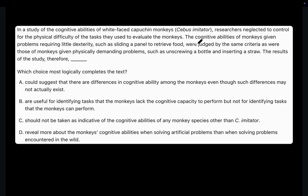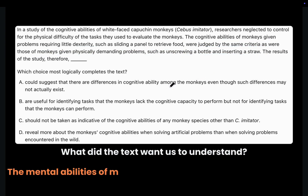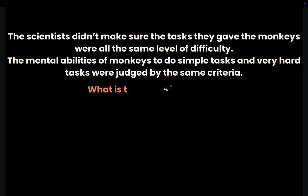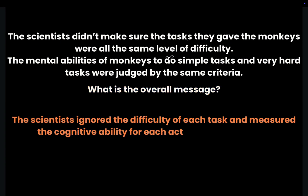Next sentence: the cognitive abilities of monkeys given problems requiring little dexterity, such as sliding a panel to retrieve food, were judged by the same criteria as were those of monkeys given physically demanding problems, such as unscrewing a bottle and inserting a straw. What did the text want us to understand? The text wanted us to understand that the mental abilities of monkeys doing simple tasks and very hard tasks were judged by the same criteria. The overall message: the scientists ignored the difficulty of each task and measured the cognitive ability for each activity the same way.